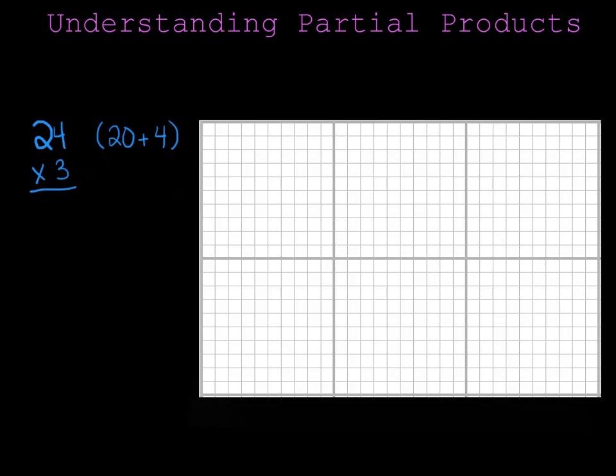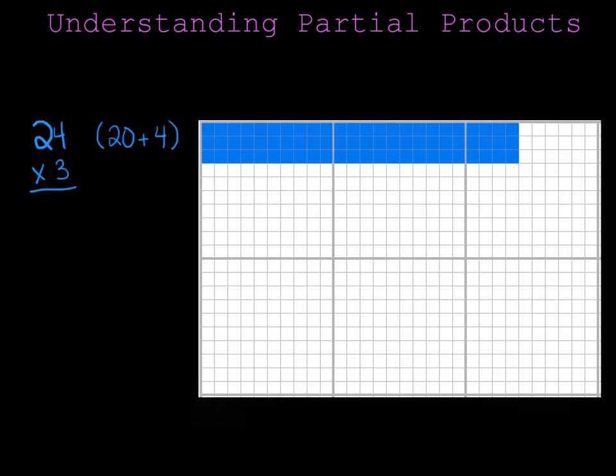So let's show a picture of 24 times 3. This rectangle is called an array and it represents the multiplication 24 times 3 because the rectangle is 10, 20, 24 units long. And it's 3 units wide, so it is the same as this multiplication problem 24 times 3.